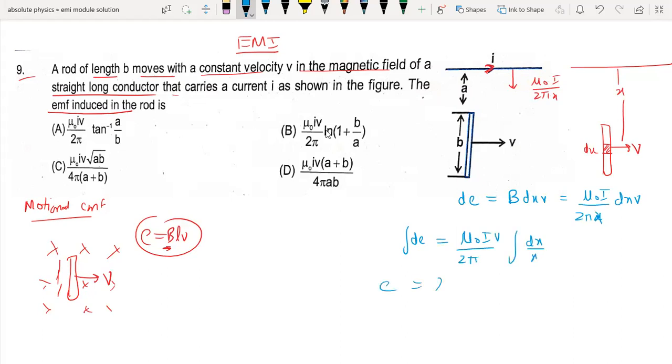This is equal to mu naught I v by 2 pi natural log of x. This equals mu naught I v by 2 pi ln of a plus b upon a.